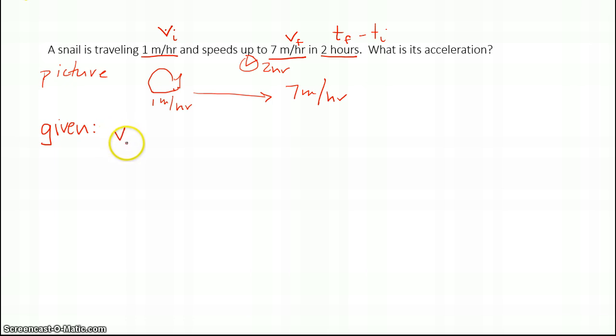Let me record down what I have. I know that Vi is one meter per hour, and I know that Vf was my final velocity. That is seven meters per hour. And I also have T value. I'll write it as Tf minus Ti. Because I can assume that my hours initially were zero, this is going to be two hours. It's perfectly fine to just write T as well. The next part is my unknown. My unknown is acceleration. I'm looking for A.